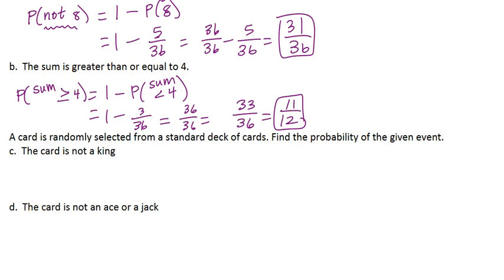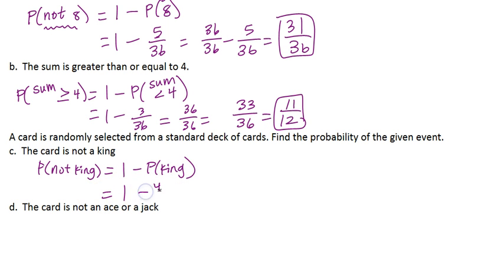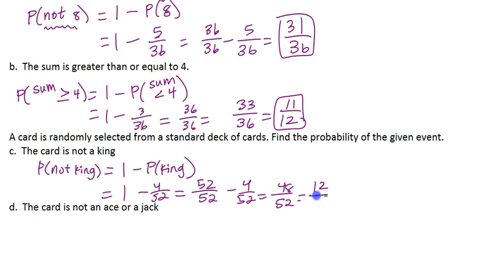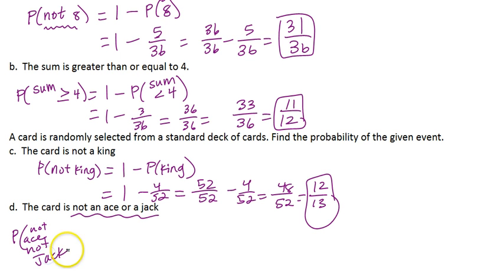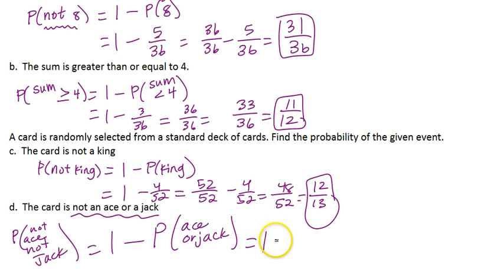A card is randomly selected from a standard deck. Find the probability of the given event. Example A: probability of a not king. I do 1 minus the probability of a king. There are 4 kings in the deck. Think of 1 as 52 over 52, subtract 4 over 52 — I get 48 over 52, or 12 thirteenths. Part D: the card is not an ace or a jack. I do 1 minus the probability of ace or jack. There are 4 aces and 4 jacks, so that's 8 cards. 52 minus 8 gives 44 over 52, which reduces to 11 thirteenths.